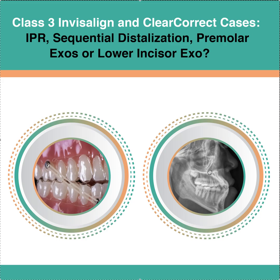Lots of different options for Class 3. Elastics are also an option — I didn't list that here but I have it in the picture. But again, this would have to be a crazy mild Class 3 in order to get something with elastics. All elastics do is cant the denture bases, and it's not always super stable. You're not going to get that much of a change. In order to even get that, you're going to have to wear them 23/7 for many, many months. It's very rare that you get that kind of compliance. For a minor change, it's probably a lot easier just to throw some IPR in and be done.